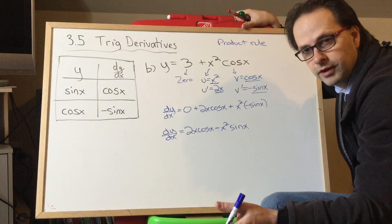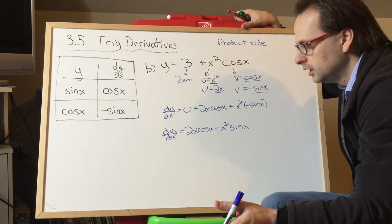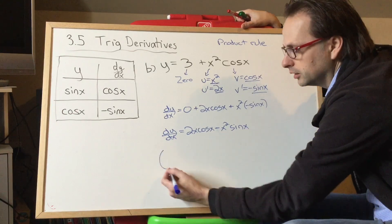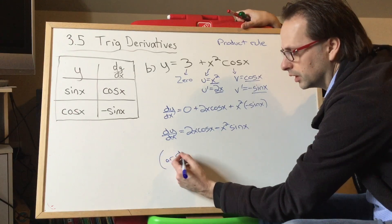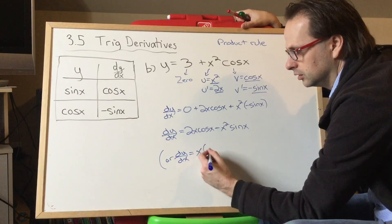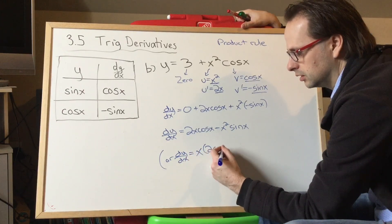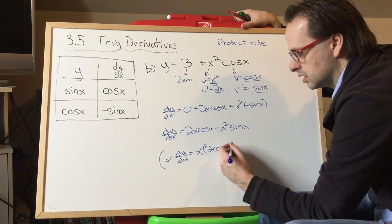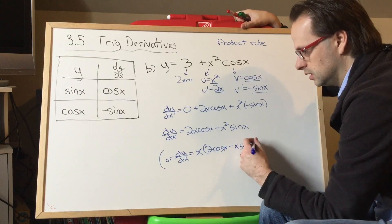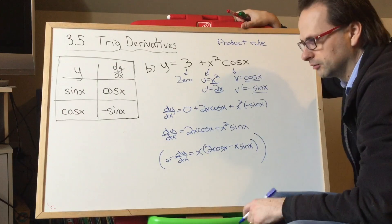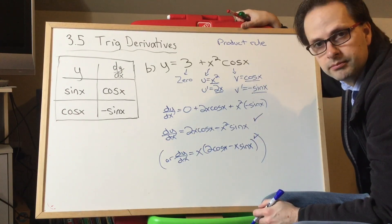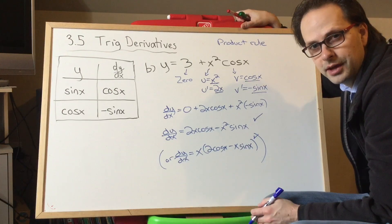You can optionally factor out x as a common factor, but you can't factor out the x's from in here. So if you wanted to, you could write this as x times (2 cos x minus x sine x). But you definitely don't have to — this is correct, this is correct. Let's take a look at another example.